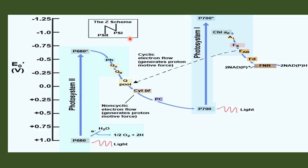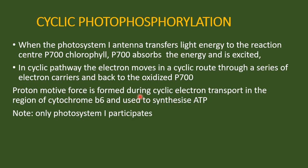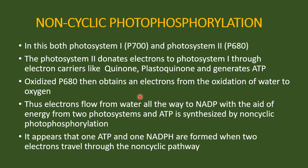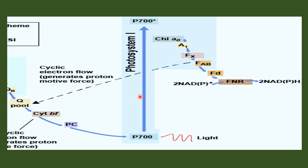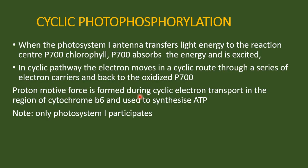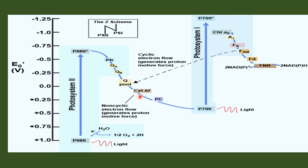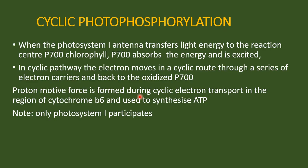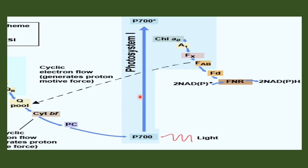In cyanobacteria we have two types of photophosphorylation: cyclic photophosphorylation and non-cyclic photophosphorylation. In cyclic photophosphorylation, photosystem 1 — that is P700 — is involved, which funnels the light energy to the reaction center.